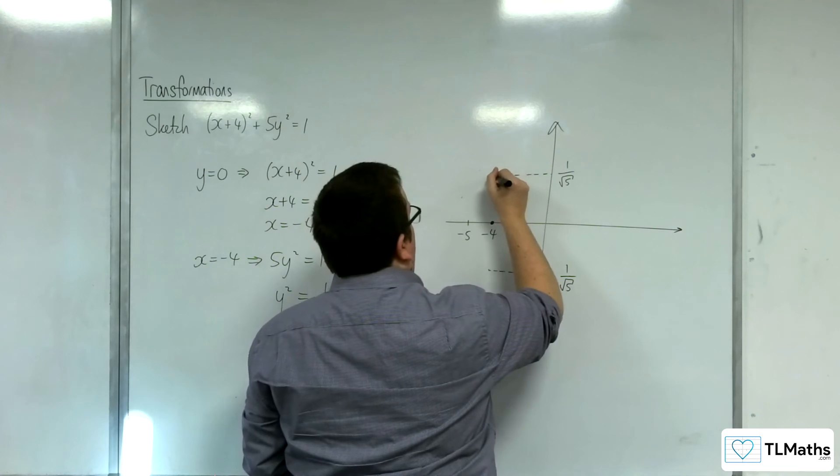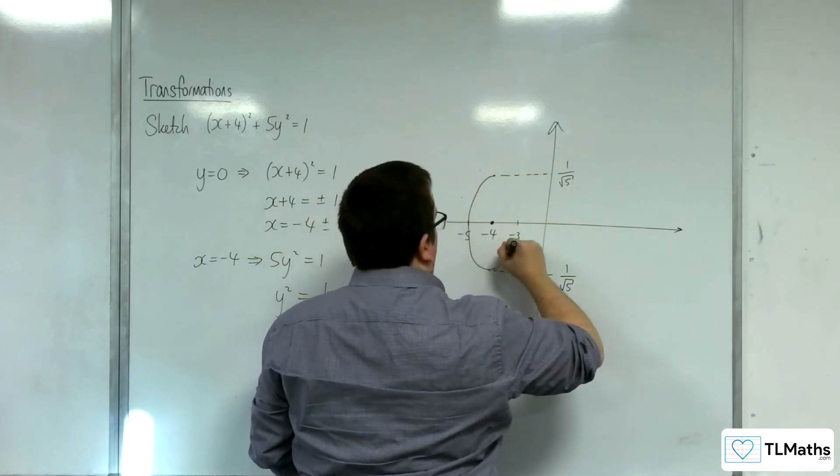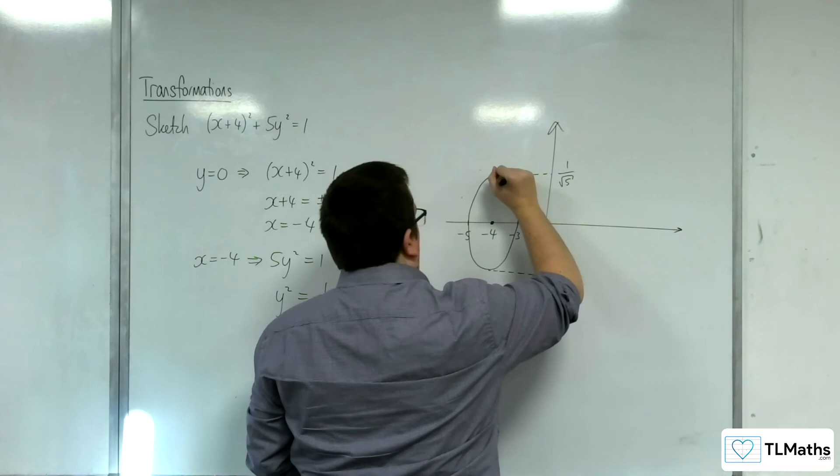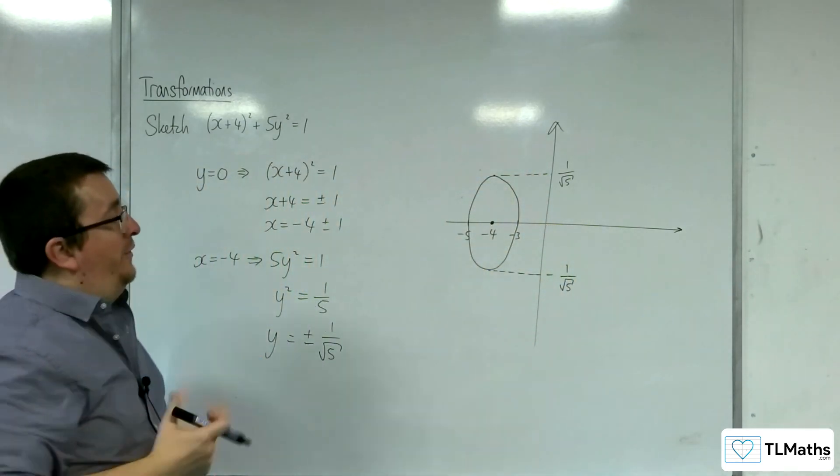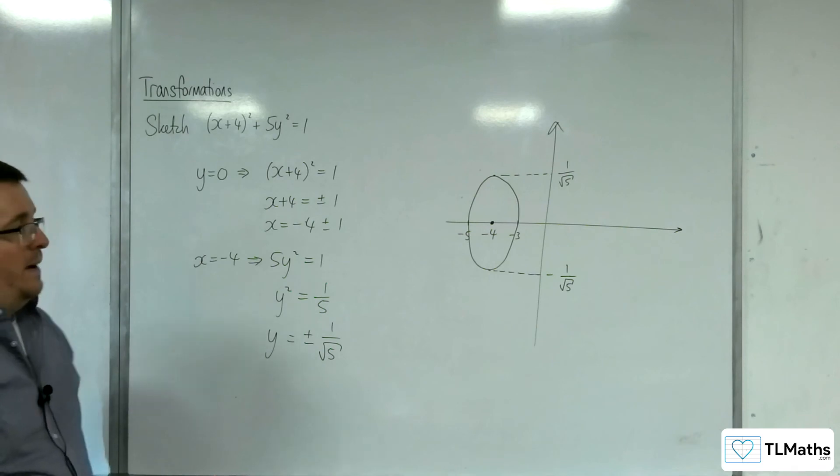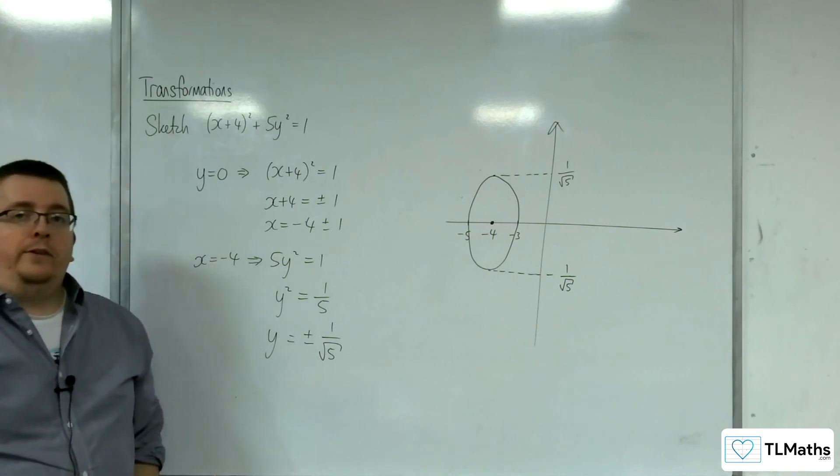So, my ellipse will look something like that. I say it every time. My ellipses are terrible. I'm just going to leave it like that. My potato shape can stay the way it is.